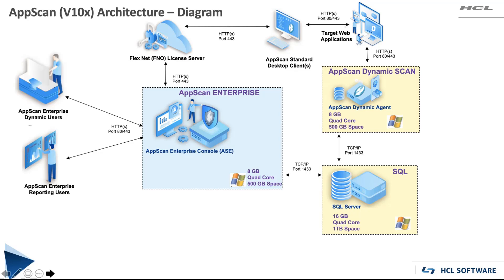If we are setting up like this, you would also need another user type — the dynamic user. The dynamic user is someone who can create scans on AppScan Enterprise, as well as review reports. If we were running scans across the enterprise, you might have multiple scan users and a number of different dynamic users or reporting users. So AppScan from a dynamic point of view would have an architecture like this.